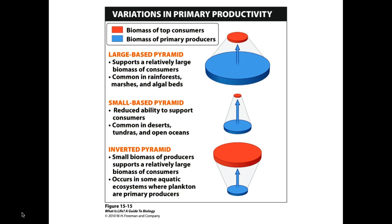We can see different ways in which this occurs in different ecosystems. The large base pyramid is the typical one you would think about in any of the grasslands or forest areas — a large base of producers and a very small top with a small number of top consumers. In a small base pyramid, it's really the same thing but with fewer organisms, because you have a less hospitable environment: deserts, tundras, open ocean — places that just can't sustain as much life.